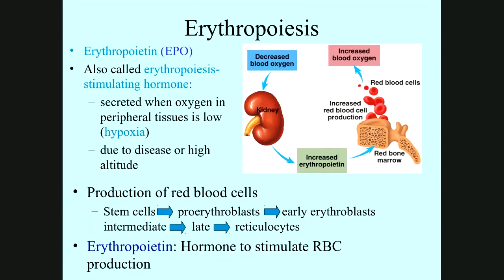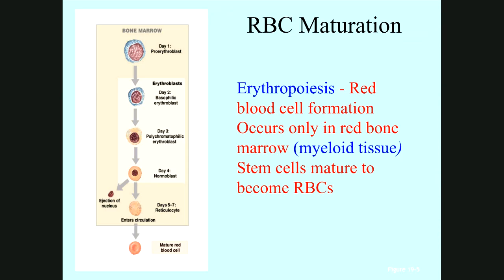In erythropoiesis, one single stem cell in the bone marrow differentiates into a proerythroblast, giving an early erythroblast, then an intermediate erythroblast, then a late erythroblast that loses the nucleus to become a reticulocyte, which then differentiates into mature red cells, or erythrocytes. This all happens in the red bone marrow, or myeloid tissue, where stem cells differentiate and become mature red blood cells.